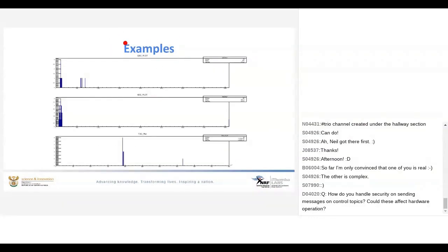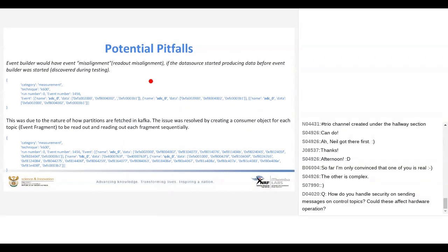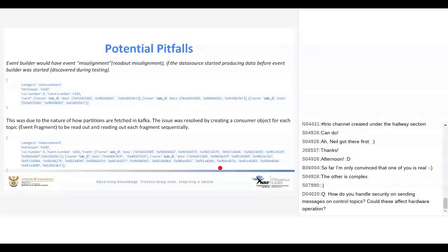Here's an example of what we have visualized using DOLOSE — this is an example of one single event. I wanted to bring a beta plot but the hardware was unavailable. Potential pitfalls encountered while developing the system: under test we discovered that if the event builder is not started before the data producers start producing data, we will get an event that only reads out one specific module. This issue occurs because of the way Kafka fetches partitions, and was resolved by creating a consumer object for each module that exists in the experiment. The result was ADC, TDC, and QDC event readout — a real event would be a bit more populated than this example.